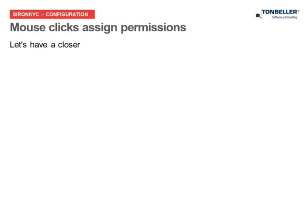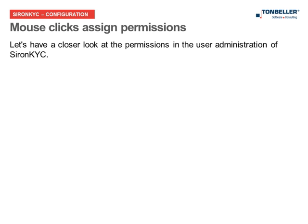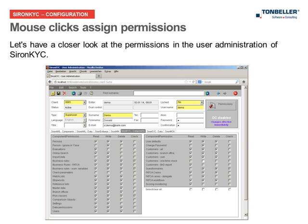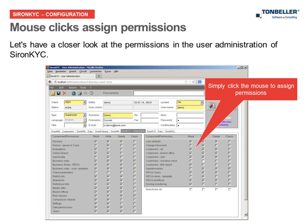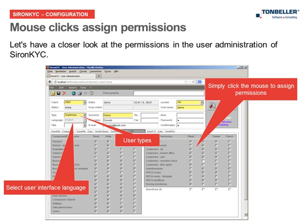Let's have a closer look at the permissions in the user administration of CERON KYC. Permissions such as read, write, delete, or check permissions are assigned by selecting the corresponding checkbox. User types that bundle permissions facilitate the assignment of permissions. They allow assignment of permissions by user type and subsequent customization. The user interface language can also be chosen for each user using a predefined list box.